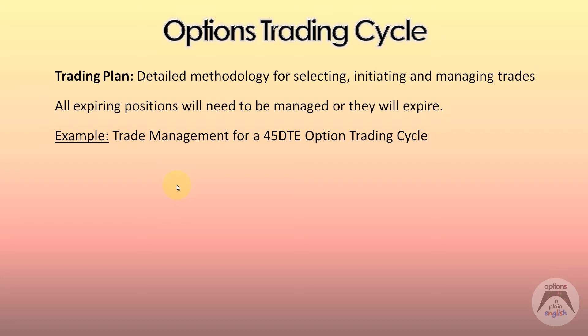We're going to take a look at the trading cycle for managing a 45-day to expiration option trading cycle. If you decide to use a 45-day to expiration cycle, you're going to be opening new positions based on a time to expiration of approximately 45 days. You'll then have to follow a cycle once expiration starts getting closer and once positions need to be adjusted or rolled. Remember, adjustments happen in the same expiration — you change the strikes or add components, but you leave the time to expiration alone.